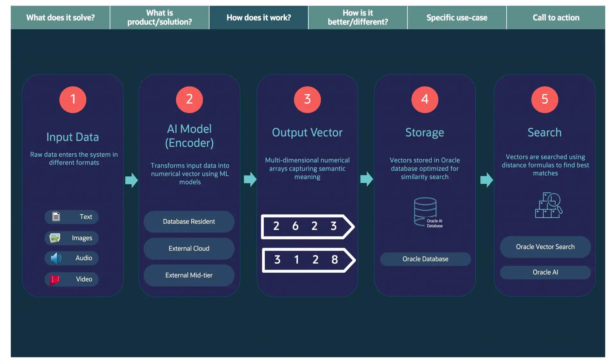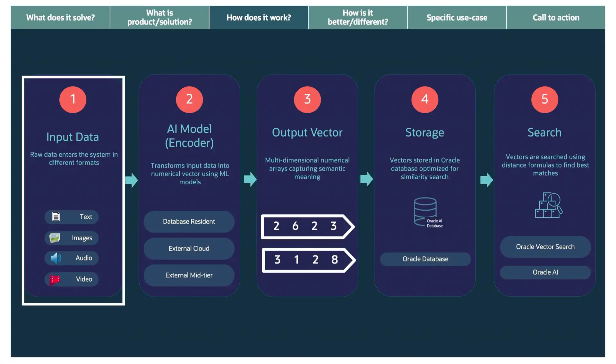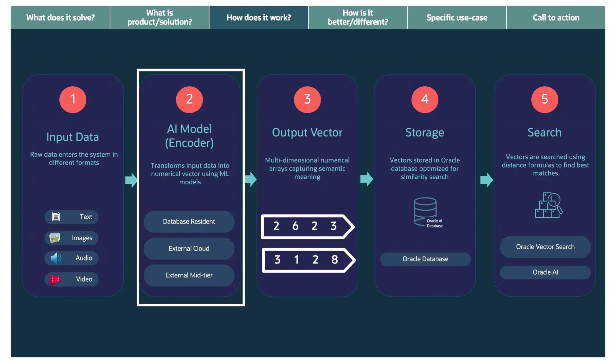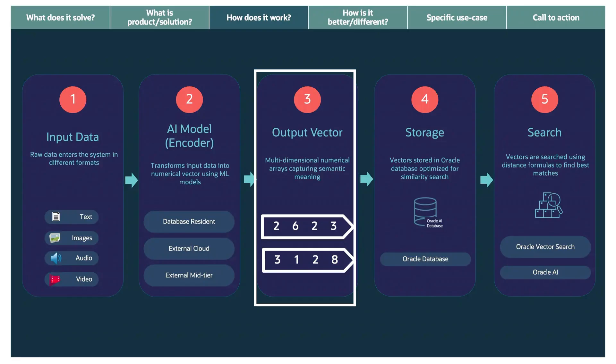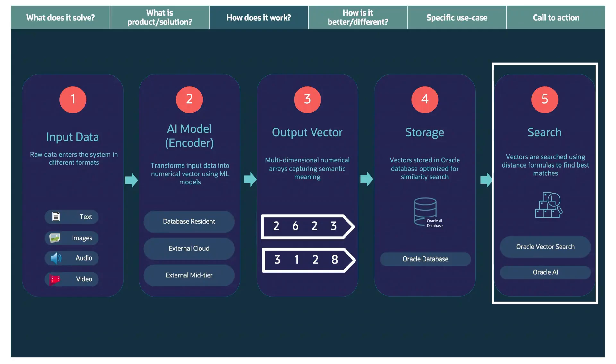This shows the complete journey from raw data to search results. One: input data — text, images, audio, video, whatever you need to search. Two: the AI model or encoder where the AI vector transformation happens — it can be database-resident, an external cloud, or an external mid-tier; you choose what works for your application. Three: the output vector is a multi-dimensional numerical array capturing semantic meaning, typically about 100 to 1,500-plus dimensions depending on the model. Four: vectors are stored in Oracle Database, optimized for similarity search — Oracle's converged architecture really shines here. Five: search — vectors are searched using distance formulas through Oracle's vector search AI capabilities. Everything flows together; it's not different products duct-taped together, but one integrated solution.